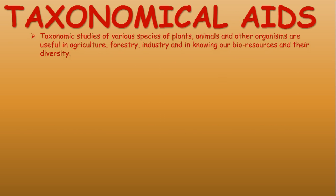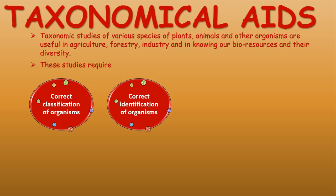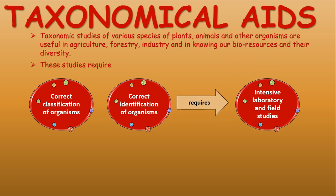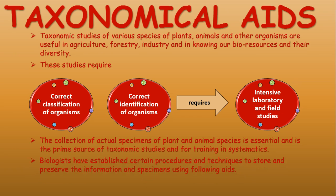Taxonomic studies of various species of plants, animals, and other organisms are useful in agriculture, forestry, industry, and in knowing our bioresources and their diversity. These studies require correct classification and identification of organisms, which in turn requires intensive laboratory and field studies. Collection of actual specimens of plant and animal species is the prime source of taxonomic studies and for training in systematics.